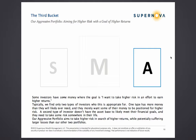The A bucket stands for aggressive. Some investors have money where the goal is: I want to take higher risk in an effort to earn higher returns. Typically, we find only two types of investors for whom this is appropriate. One type has more money than they will likely ever need and simply wants some positioned for higher risk. A second type doesn't have the asset base to likely meet their financial goals and needs to take some risk somewhere in their life. Our aggressive portfolio aims to take higher risk in search of higher returns, while potentially suffering larger losses than our other two portfolios.